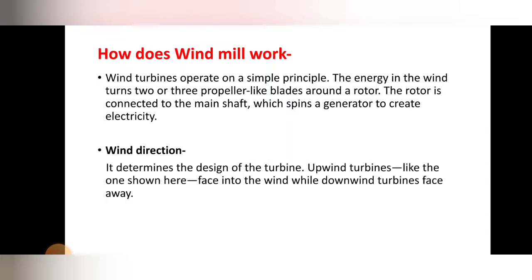The energy in the wind is utilized to rotate the propeller blades — two or three blades are there on the propeller. The rotor is connected to the main shaft, which spins the generator to create electricity. That is the simple principle by which the windmill works. The energy of wind rotates the rotor of the propeller, and that rotor is connected to the main shaft of the generator. Once the rotor rotates with wind energy, the shaft of the generator also rotates, and due to that rotation, electricity is produced.